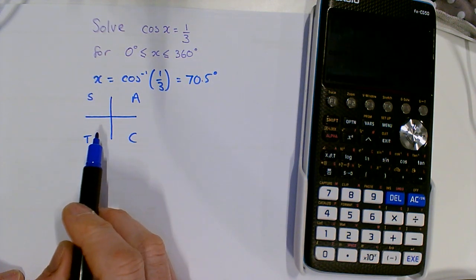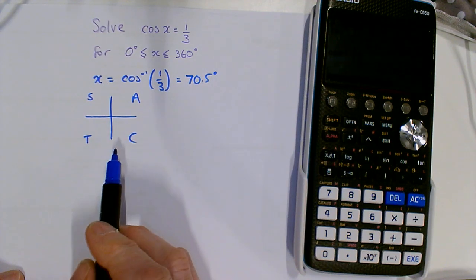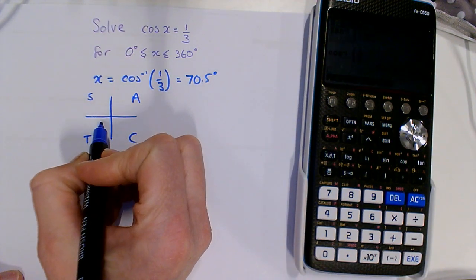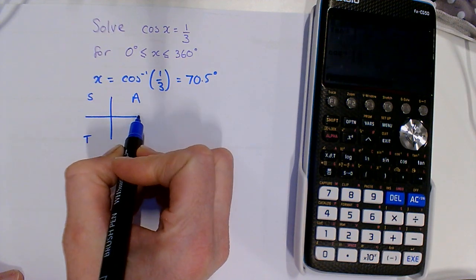Only tan for these reflex angles, and only cos for these reflex ones. We always measure angles anti-clockwise from the x-axis.